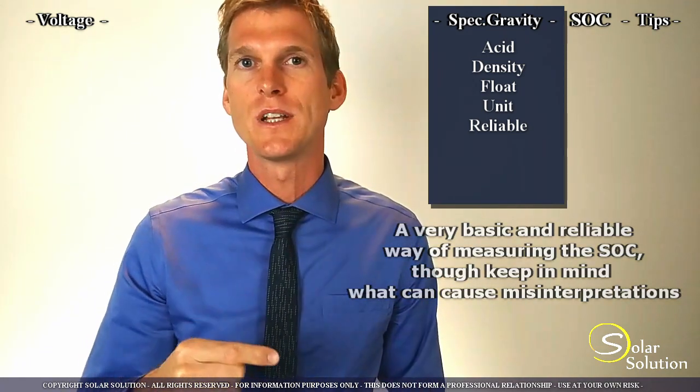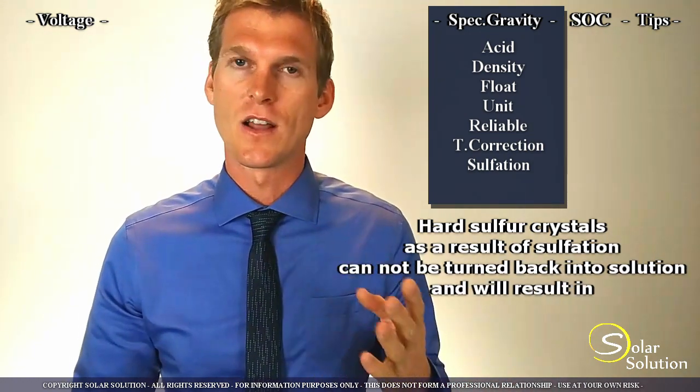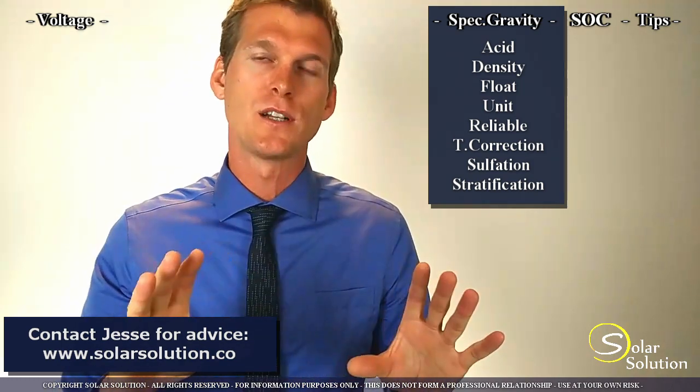Just like voltage measurement, specific gravity is susceptible to misinterpretation. Temperature correction is often overlooked, since as temperature changes the density of your battery water also changes. Another thing often misunderstood is that if you lose some acid due to sulfation of your battery, that acid cannot be regained — it is lost and cannot be turned back into acid again. Also be aware that stratification can occur: since acid is heavier than water, if the battery sits idle for a long time, the acid accumulates at the bottom. If you take a sample from the top, you'd be measuring almost only water and your readings would be completely off.